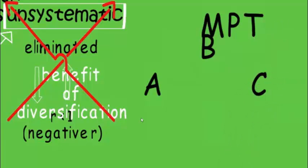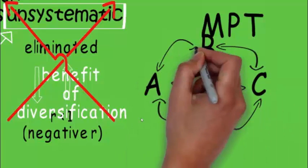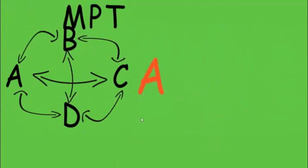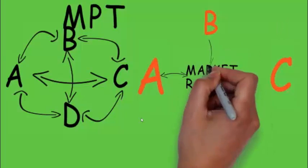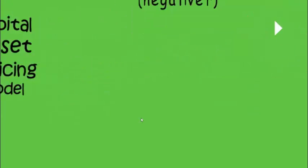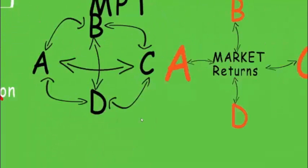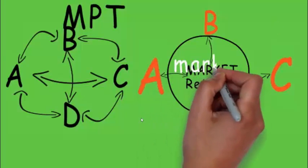In Modern Portfolio Theory we were combining two or more stocks — such as P and C, C and D, A and D — with negative correlation to eliminate risk. But CAPM is the updated version. It compares each stock — Security A, Security B, Security C — with the market return, not with another stock.